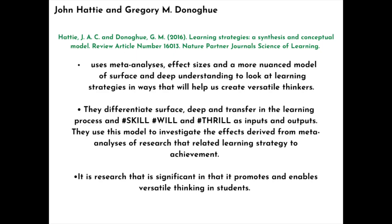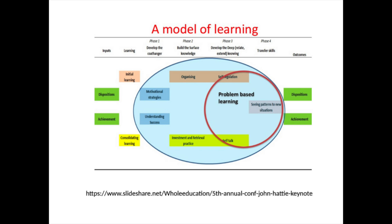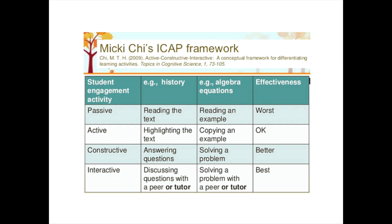John Hattie and Gregory M. Donoghue have developed their own model of learning, which is quite interesting. You can see, as we move from left to right, the learning shifts from the initial dispositions of the learner to organising, self-regulating, and seeing patterns that can be applied to new situations. There's also Miki Chi's ICAP framework, which identifies a shift in the learner's approach from passive to active to constructive, and finally to the interactive.